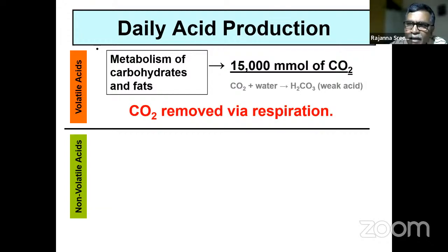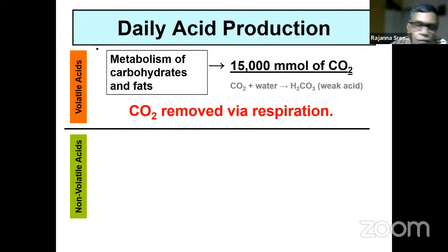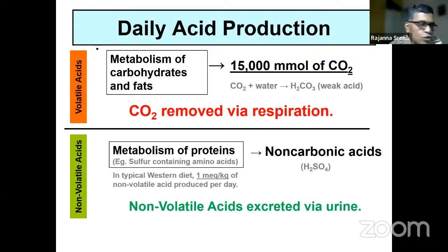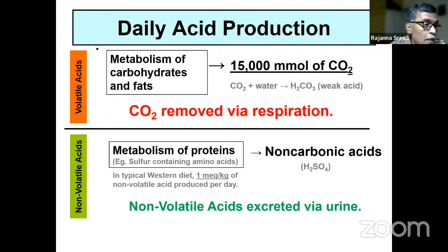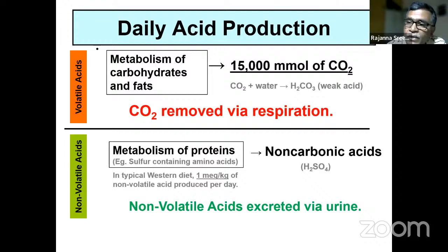Extreme ranges of pH — less than 7.2 or greater than 7.55 — are life-threatening. Small changes in hydrogen ion concentration lead to huge changes in pH, and therefore hydrogen ion concentration has to be very tightly controlled. Every day, the human body produces about 15,000 millimoles of carbon dioxide by metabolism of carbohydrates and fats. This carbon dioxide, when combined with water, produces carbonic acid — a weak acid — which is removed by respiration and is therefore called a volatile acid.